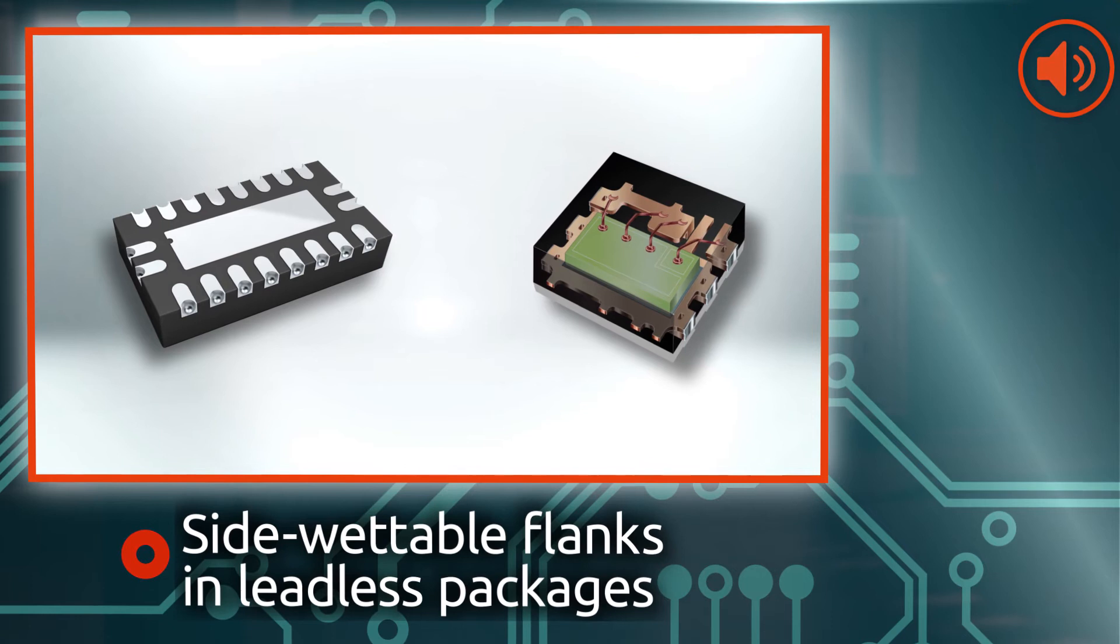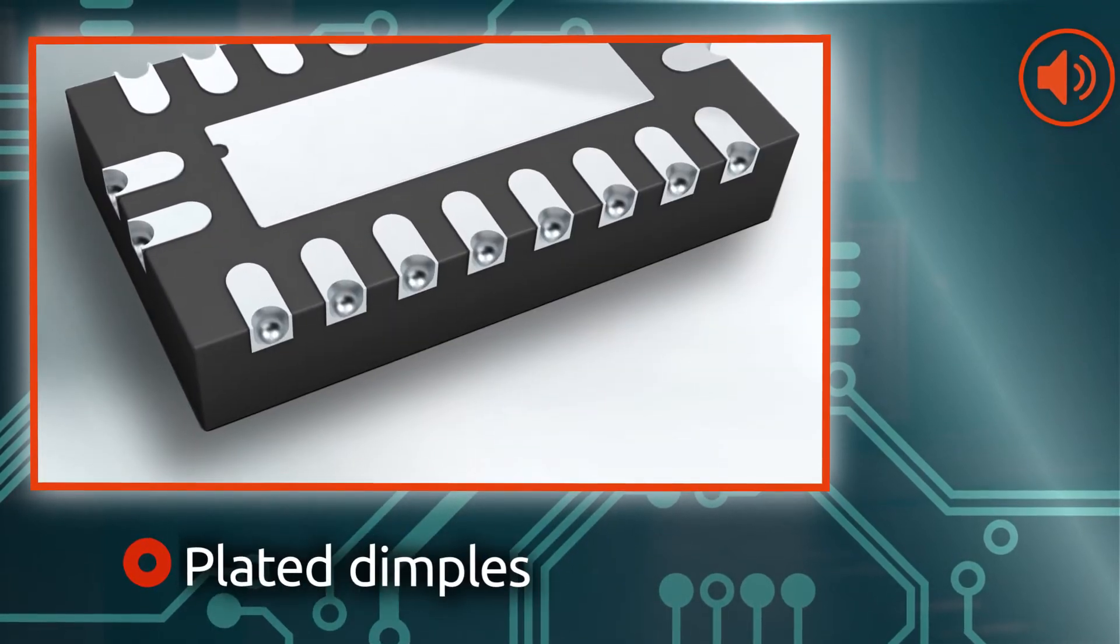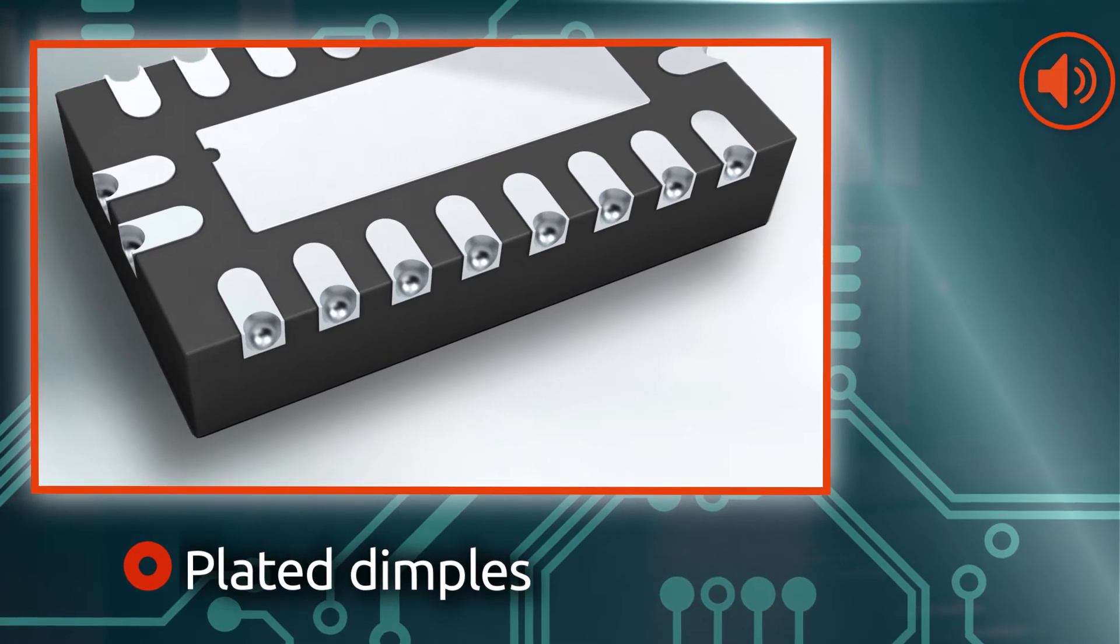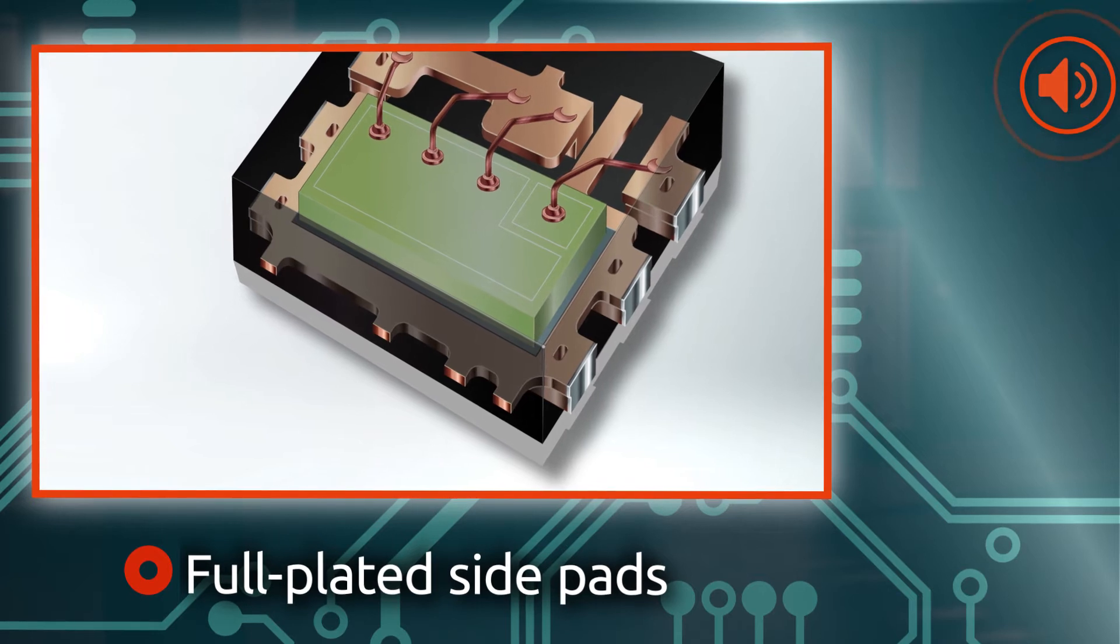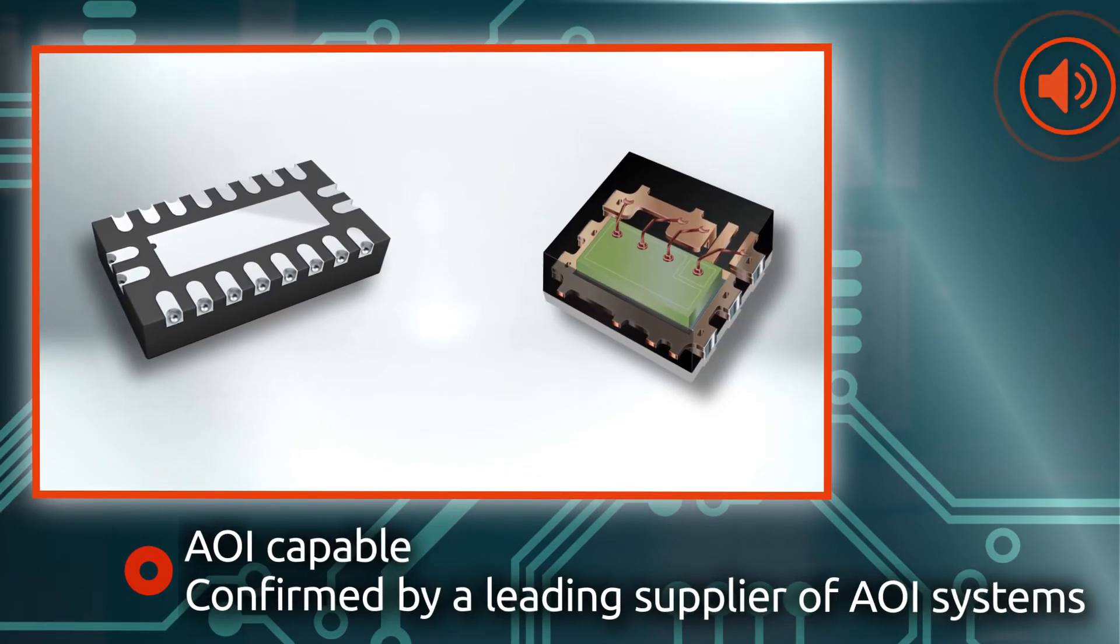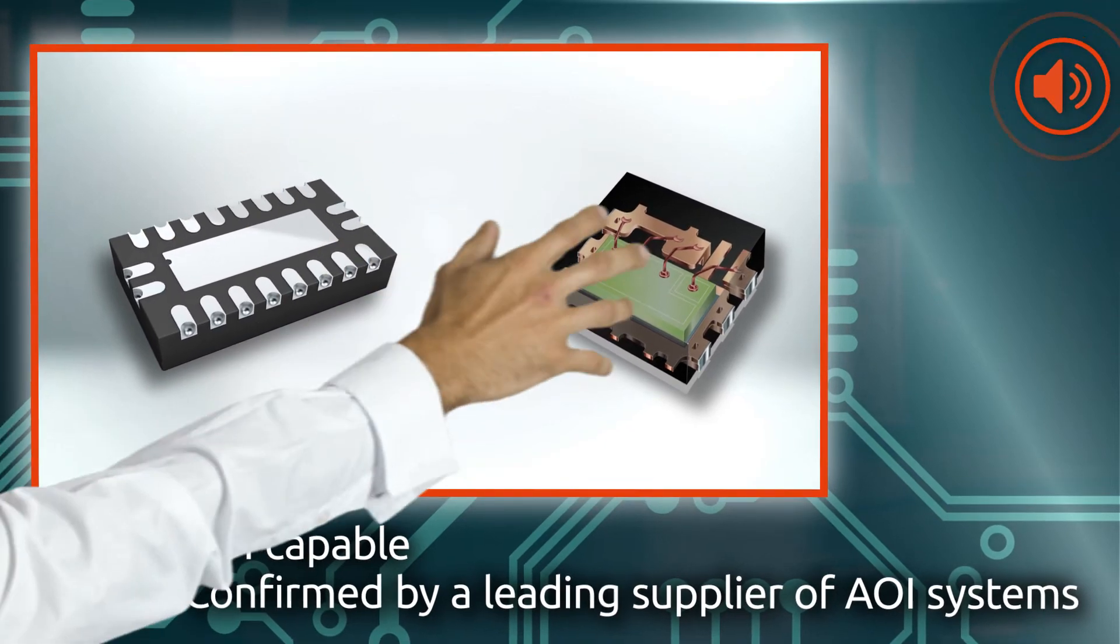Nexperia has introduced two options for side wettable flanks in leadless packages. One option is packages with dimples in each pin, which are plated in the same way as the pads. The other has solder pads with full plated side flanks. Both options meet the requirements for automotive packages by allowing a visible solder joint to develop.